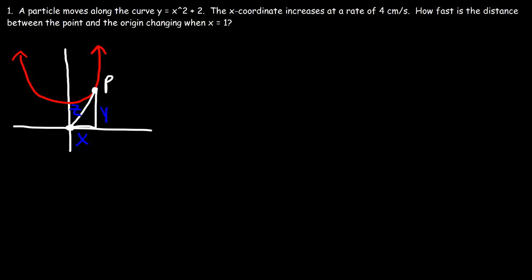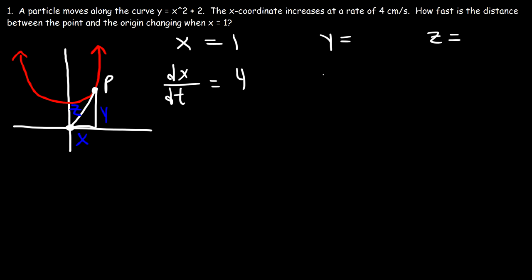So our goal in this problem is to calculate dz/dt. Now let's make a list of what we know. We know that x is equal to 1. We don't know the value of y, and we currently do not know the value of z. All of these are variables — x, y, and z change; none of them are fixed or constants. We have dx/dt, the rate at which the x coordinate is changing, and that's 4 centimeters per second. We don't have dy/dt nor dz/dt, but dz/dt is what we're looking for.